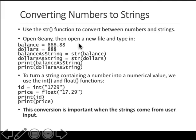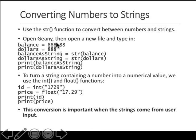Sometimes you may need to convert numbers into strings and vice versa. You can cast it - this is called casting. For example, balance is a float and dollars is an integer. When you define a new variable called balance as string, you assign it the value balance but cast it as a string using the str() command. So balance will show as 888.88 but it is stored as a string, while the original is stored as integer or float.